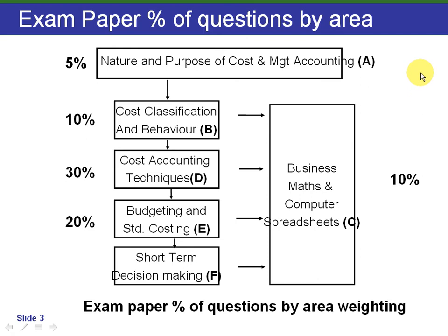This is followed by budgeting and standard costing — covering budget preparation, variance analysis, and that type of thing. This section is worth 20% of the paper.